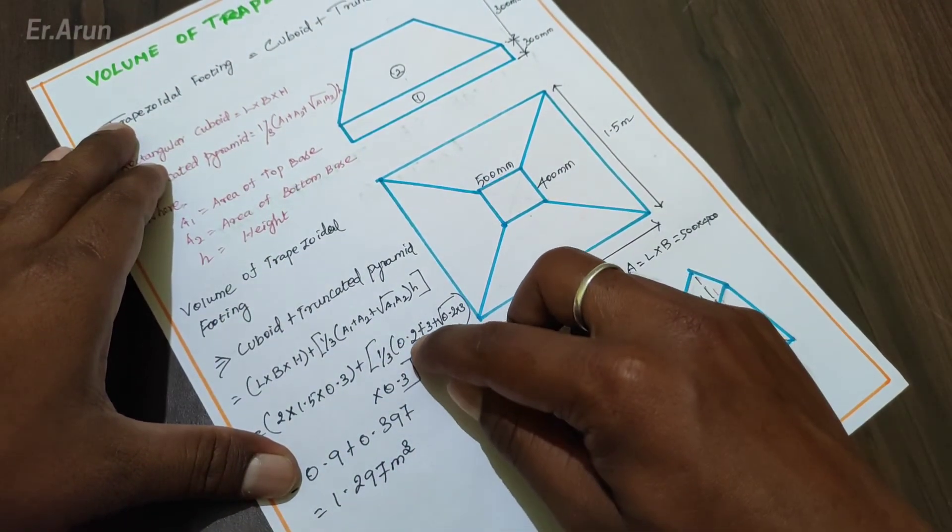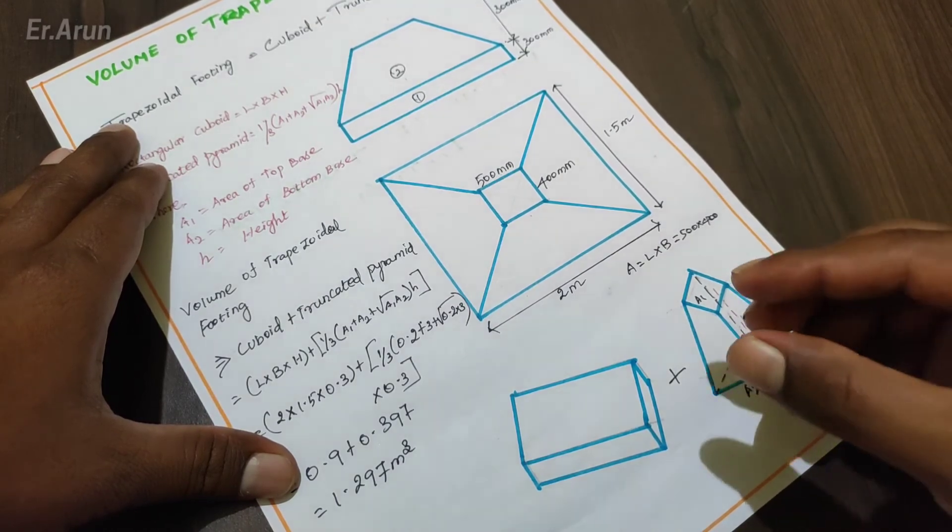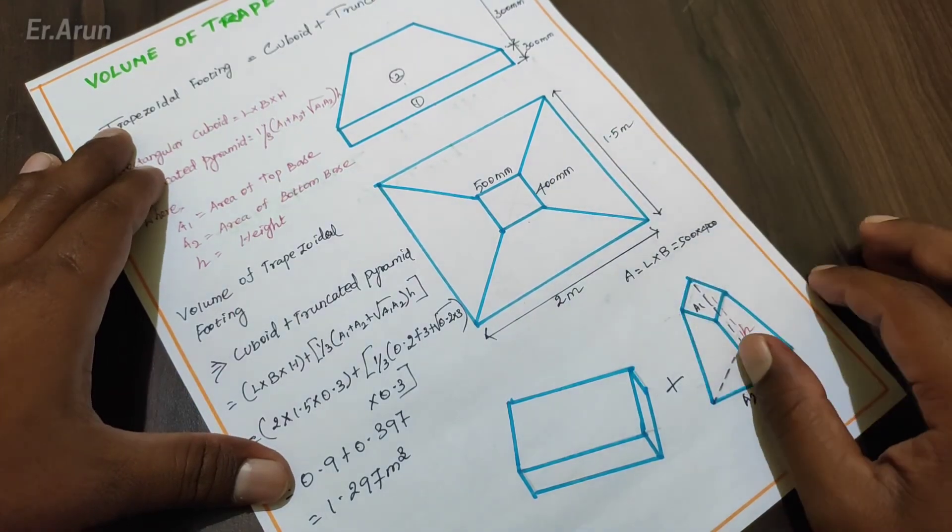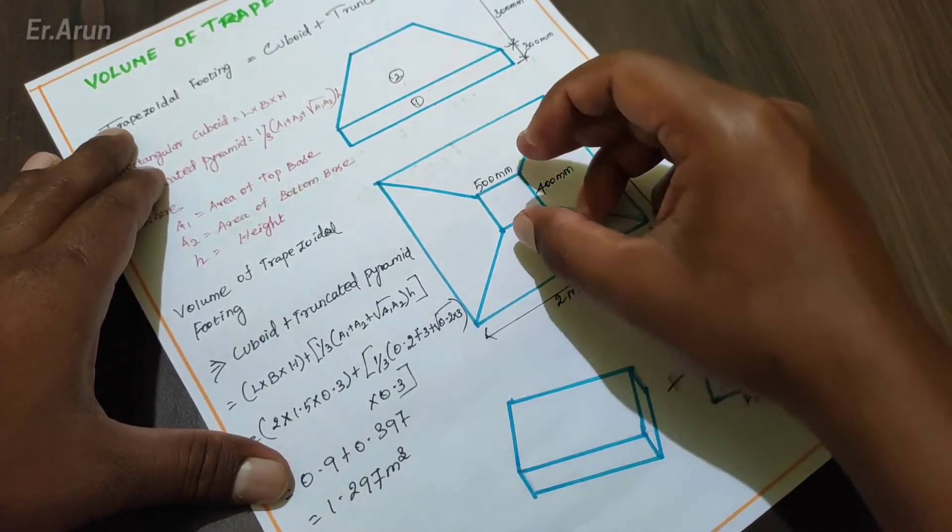1 by 3. A1 is the area of the top base and A2 is the area of the bottom base. Here we have 500 mm. We have to add the sizes.